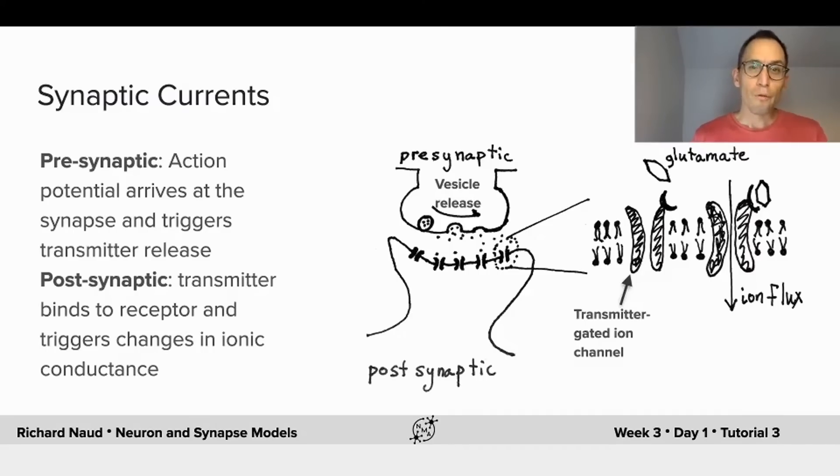So first a little bit of anatomy. There's two sides of the synapse. There's a presynaptic side where an action potential arrives and triggers synaptic release through vesicles fusing on the membrane. Then there's the postsynaptic side which has receptors sensing the presence of these neurotransmitters and opening ion channels leading to current flow.